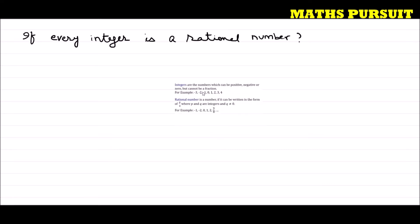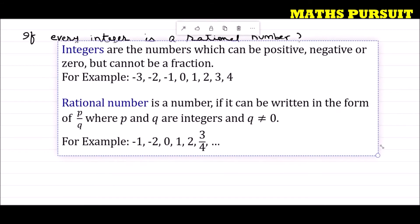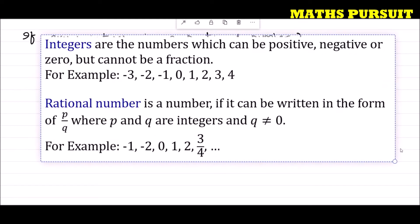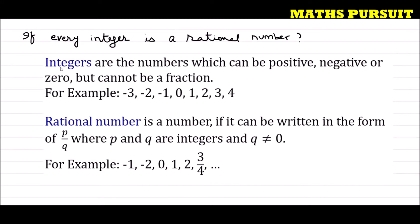If you look at the screen, I have posted the definition of integer as well as rational number. If you understand these definitions, it will be very easy to answer the given statement. Integers are the numbers which can be positive, negative, or zero, but cannot be a fraction.